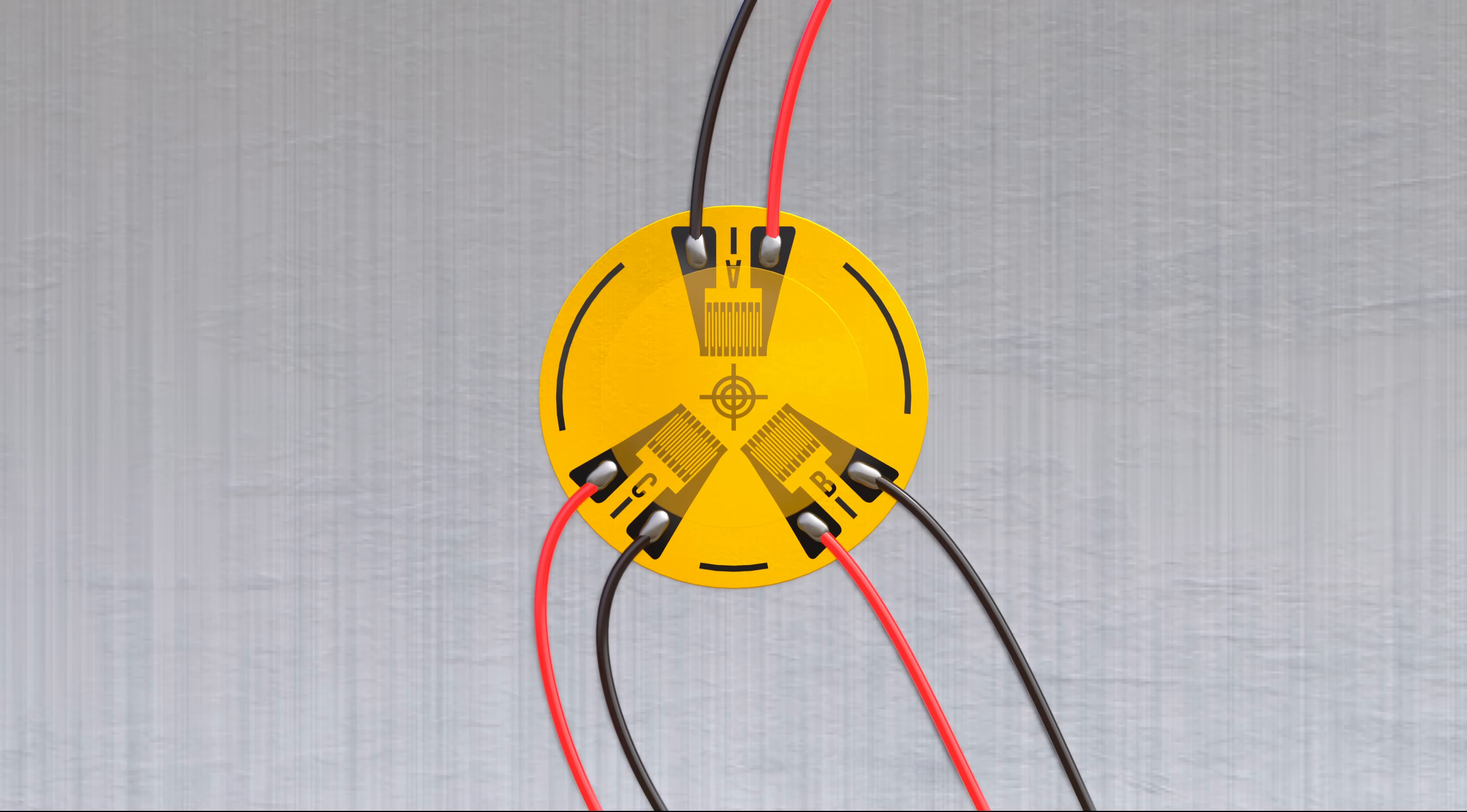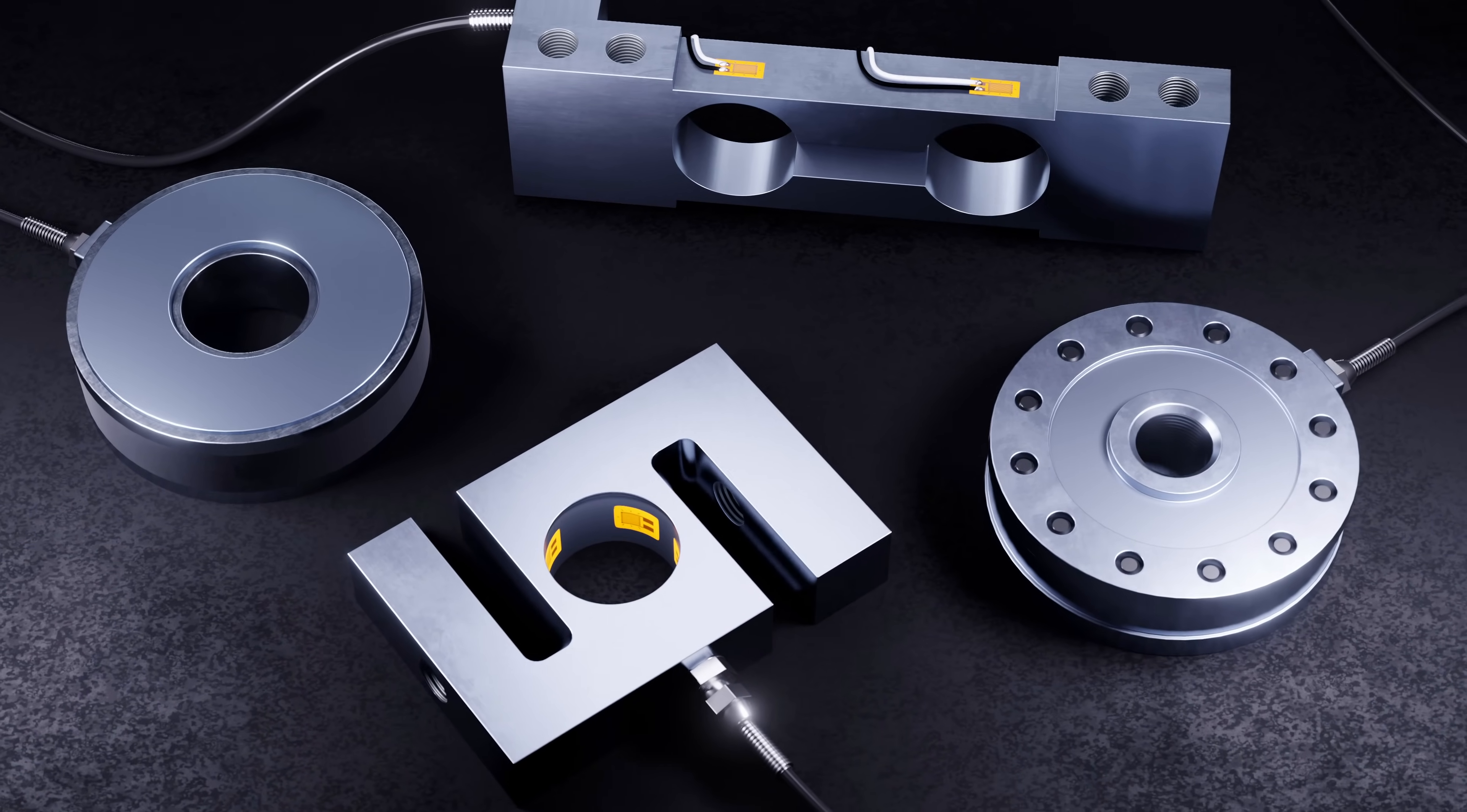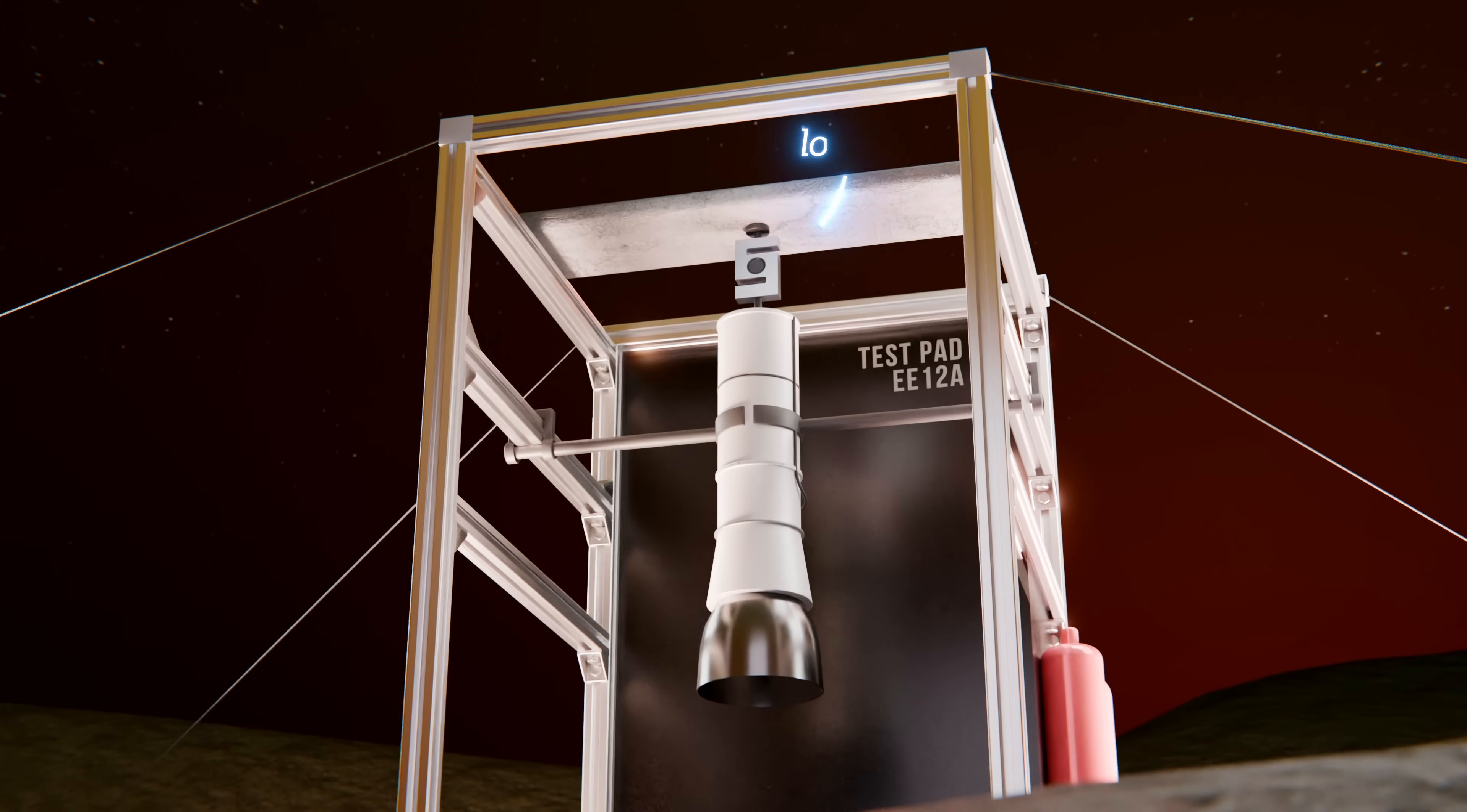Strain gauges have so many fascinating applications. One very important one is in load cells. Sensors that use strain gauges to measure forces extremely accurately. Load cells are used everywhere in engineering, from weighing product on an assembly line, to measuring the thrust of rocket engines.